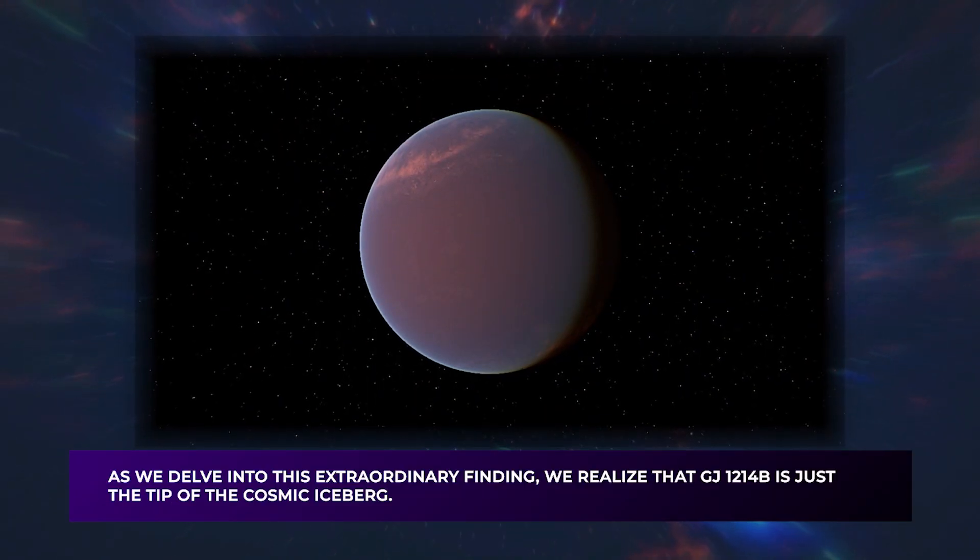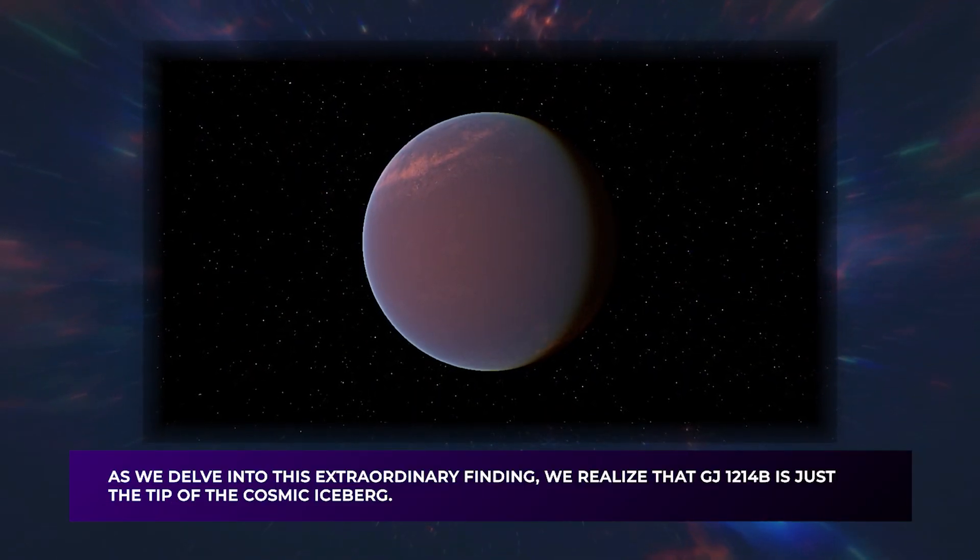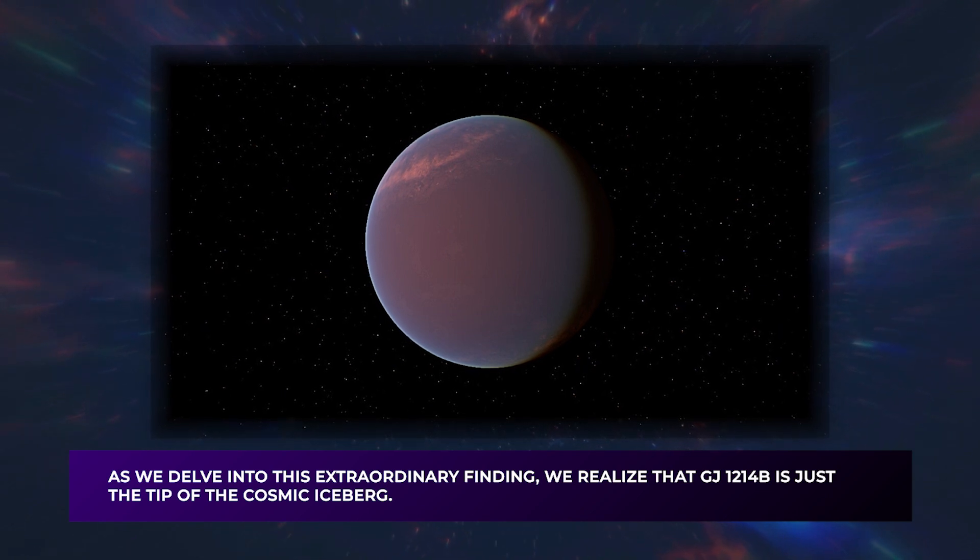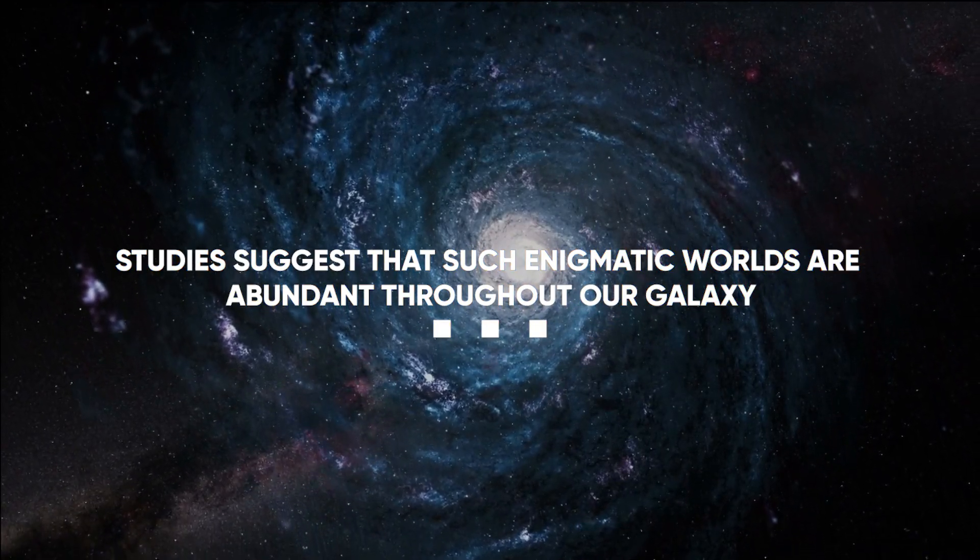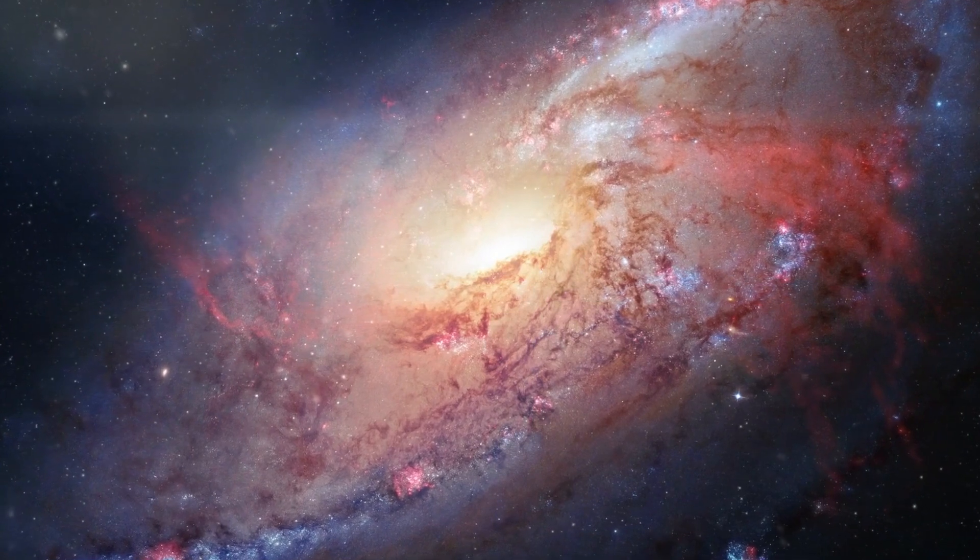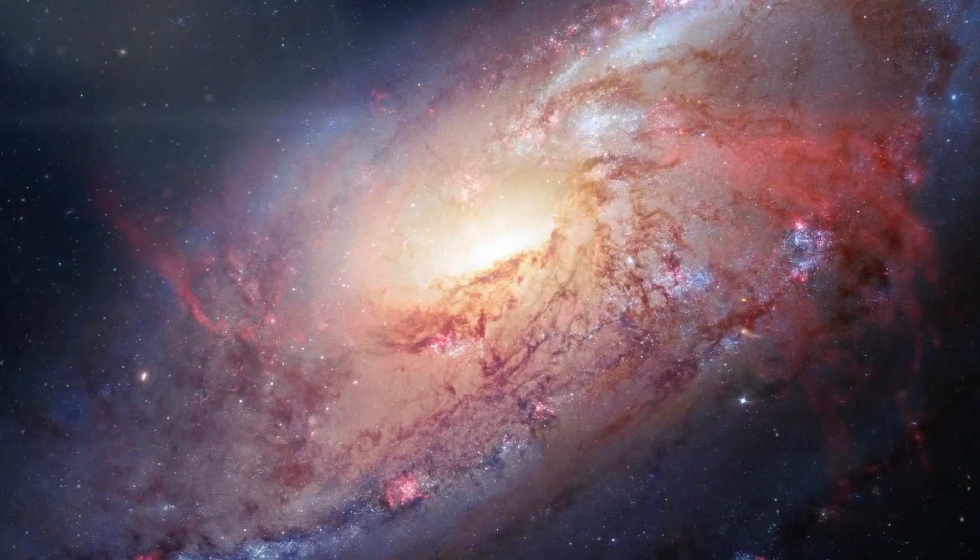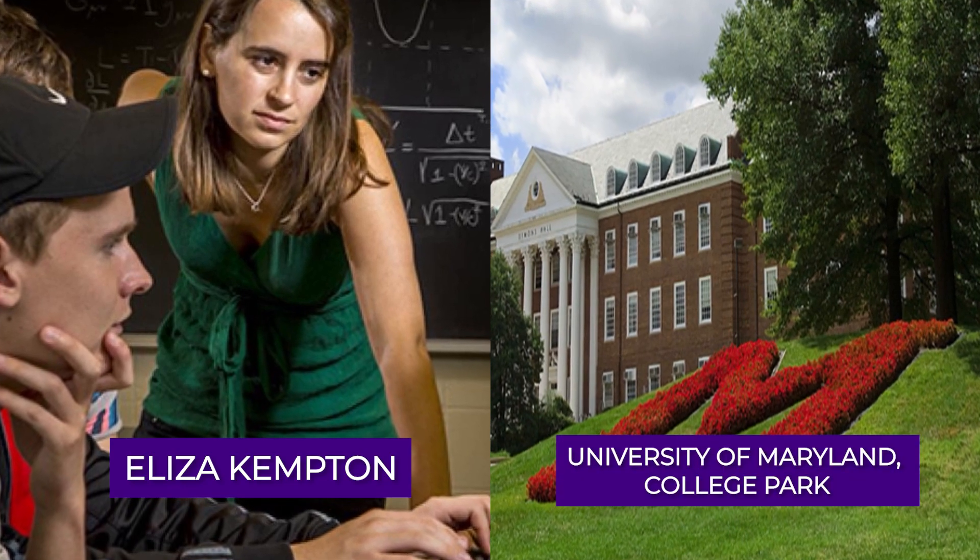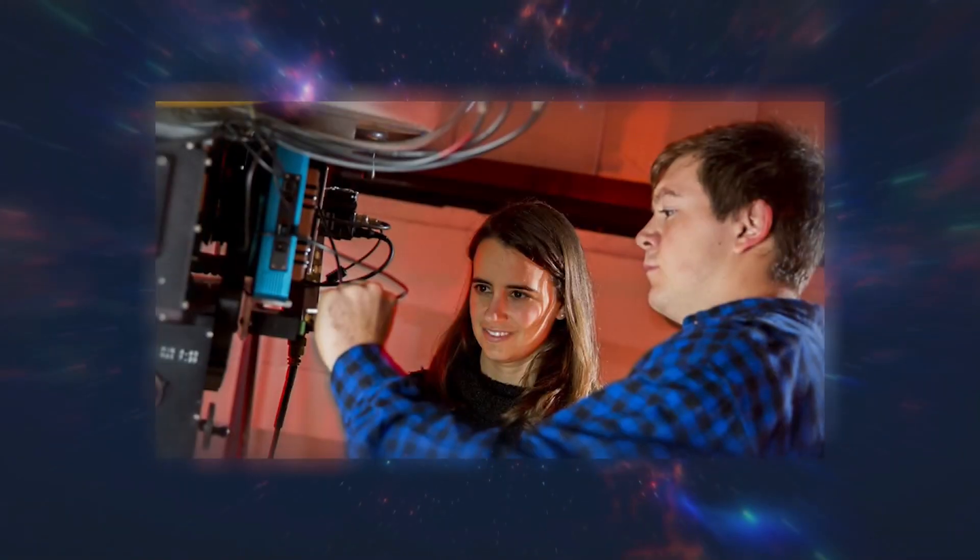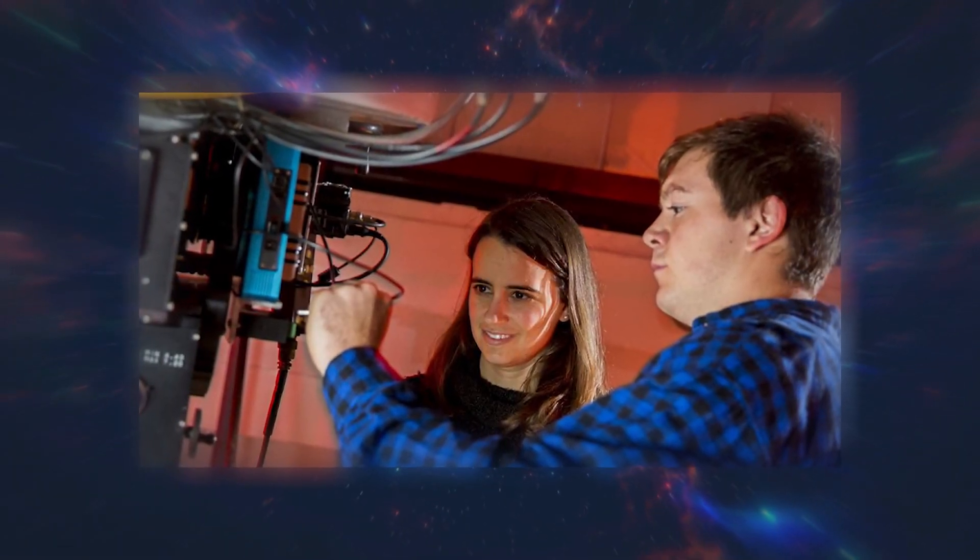As we delve into this extraordinary finding, we realize that GJ-1214b is just the tip of the cosmic iceberg. Studies suggest that such enigmatic worlds are abundant throughout our galaxy, sparking new questions about the prevalence and diversity of planetary systems. Eliza Kempton, an esteemed astronomer from the University of Maryland, College Park, poses fascinating questions that resonate with our curiosity.